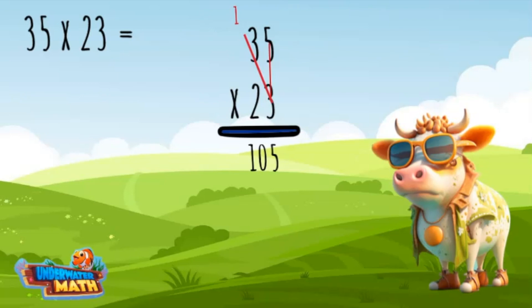Now we move to the tens place. Since we have moved to the tens place, I put a zero in the ones place like this. Then I multiply two times five for an answer of ten.